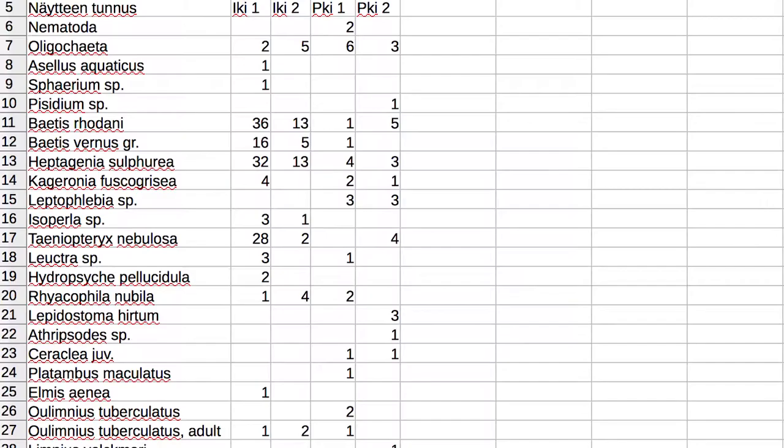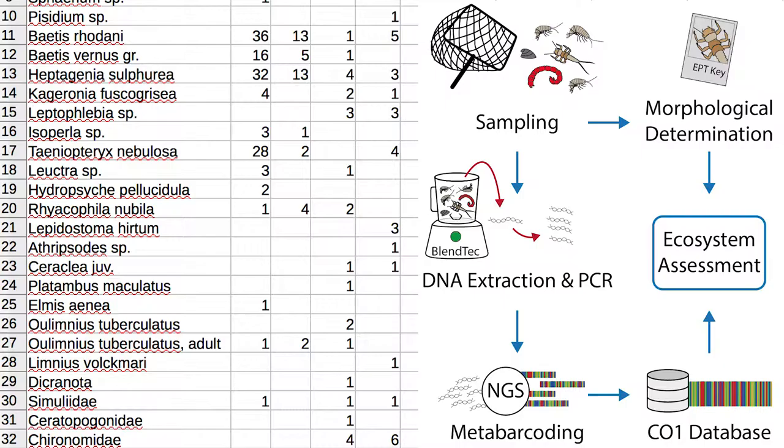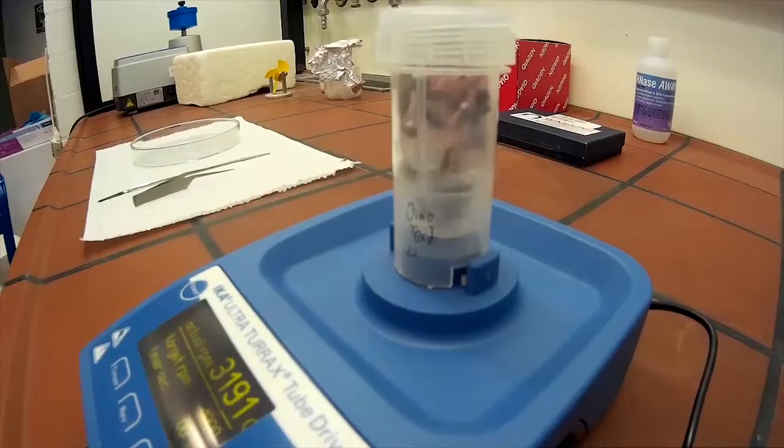All samples were identified based on morphology, and we are now going to extract the DNA and apply our metabarcoding protocols to identify the same samples with DNA barcoding techniques. This way we can compare performance of traditional morphology-based identification versus DNA-based metabarcoding methods.